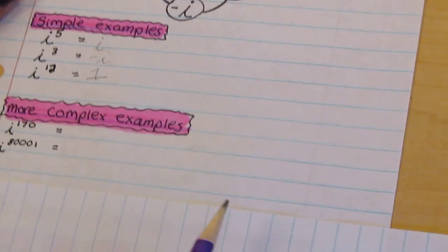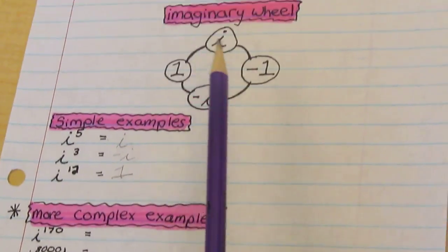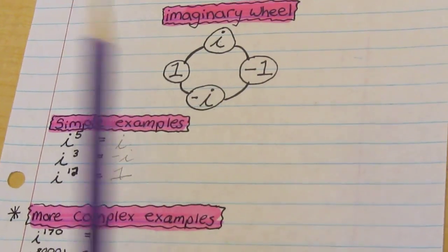Now for a little bit more complex examples these are much bigger numbers as you can tell. And I doubt anyone really wants to count a hundred and seventy times around the circle.